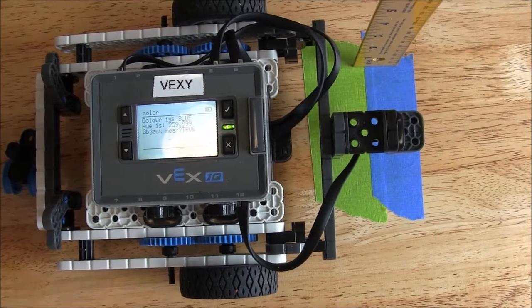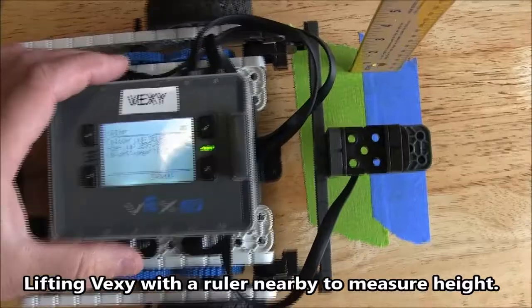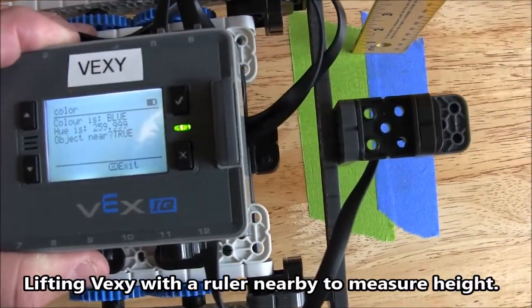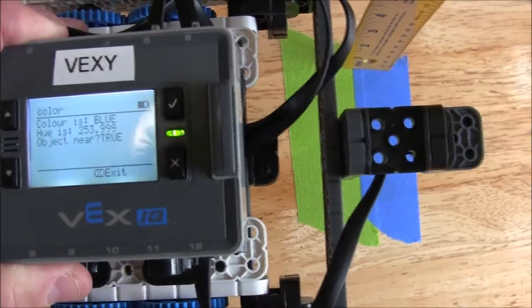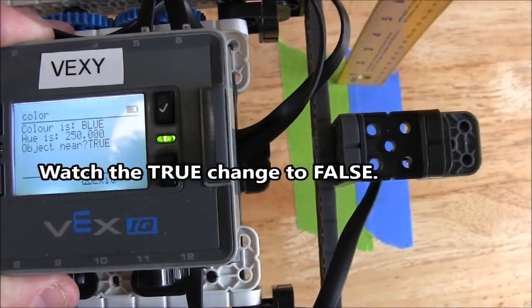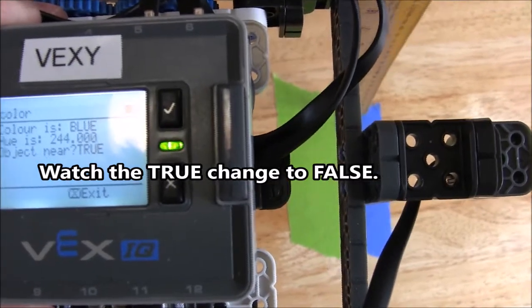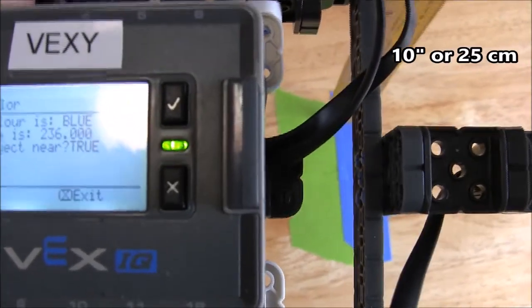Now we're measuring how far we can lift Vexi before the distance part of the color sensor changes to false. So you can use the color sensor to also prevent the robot from running into walls or objects.